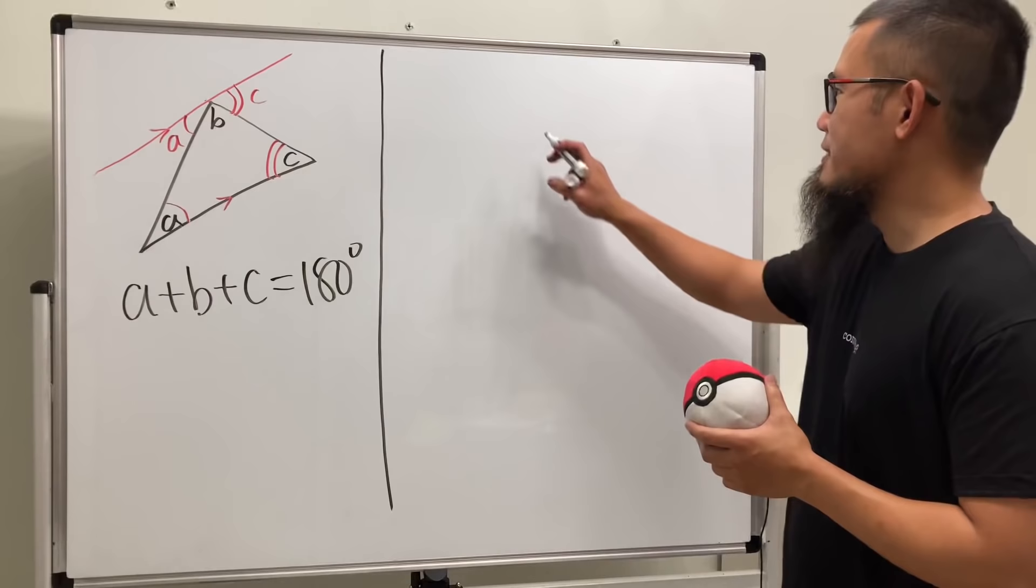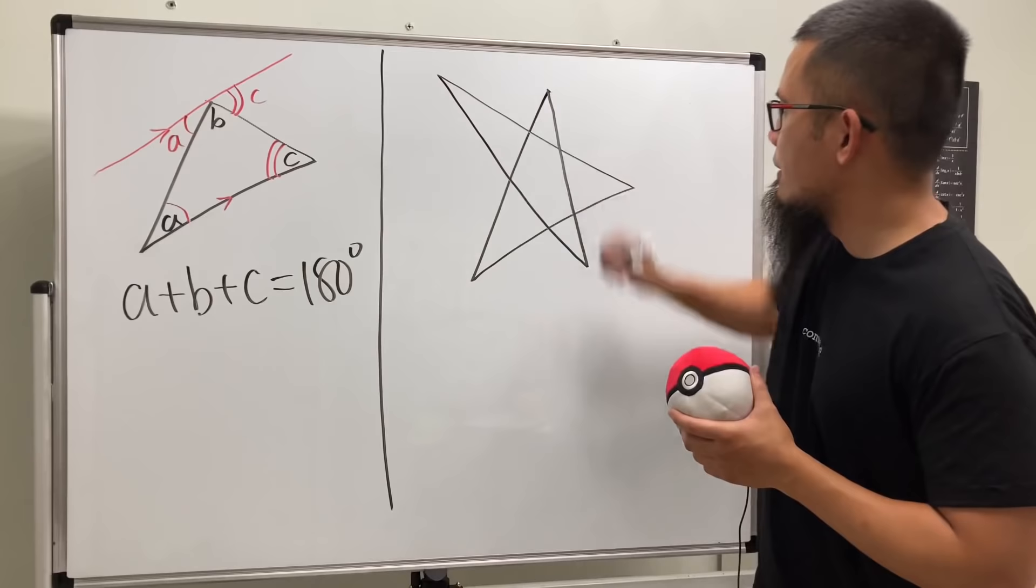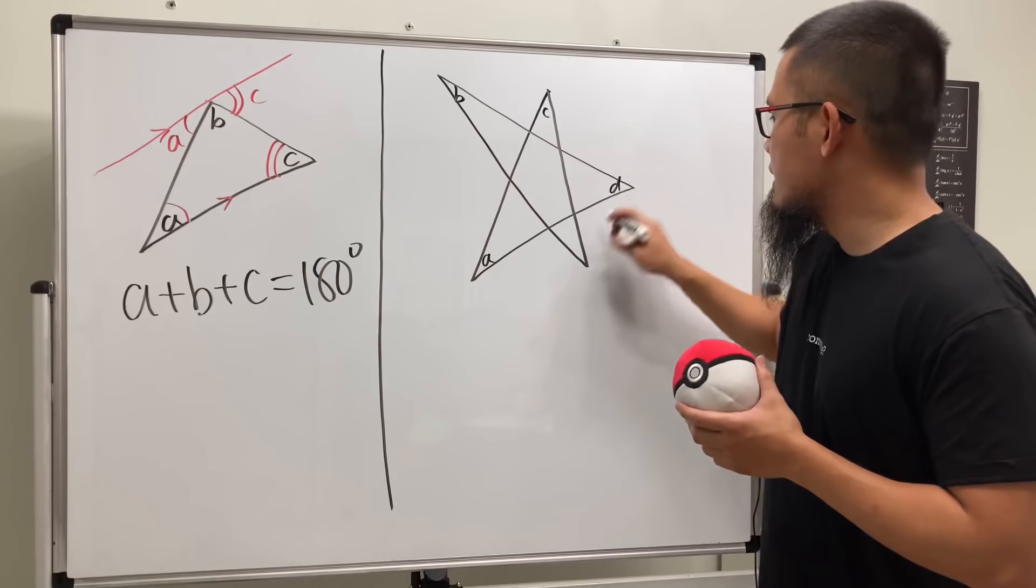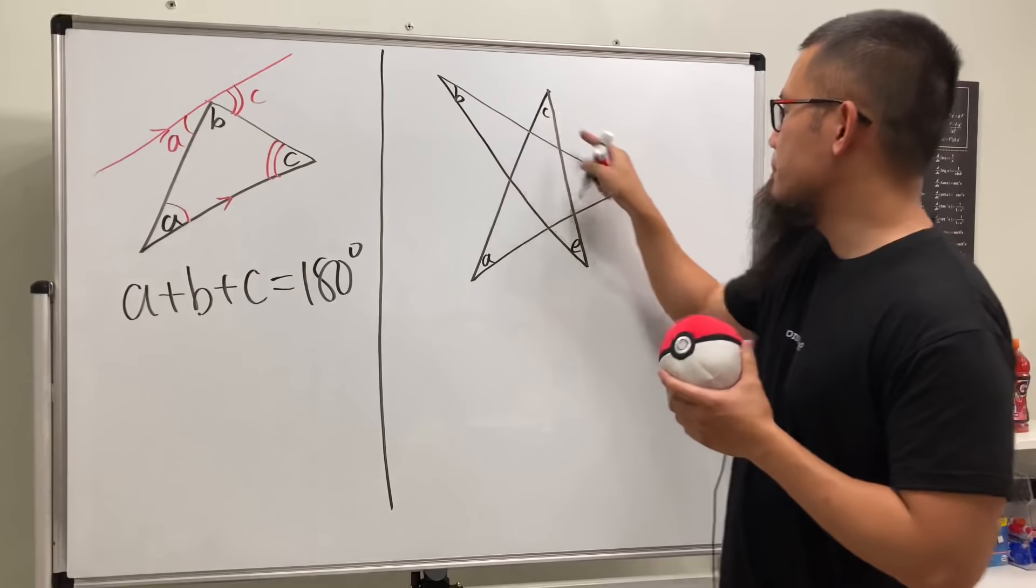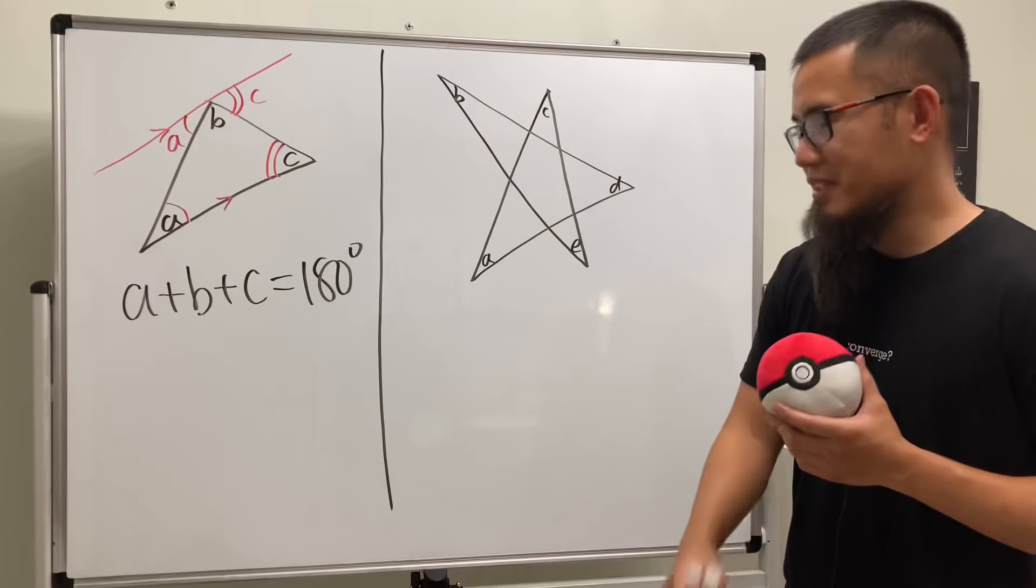So let's take a look at the star. Let me draw you guys a nice star. So let's say A, B, C, D, and E, we want to show that A plus B plus C plus D plus E add up to be 180 degrees as well. But how can we do that?